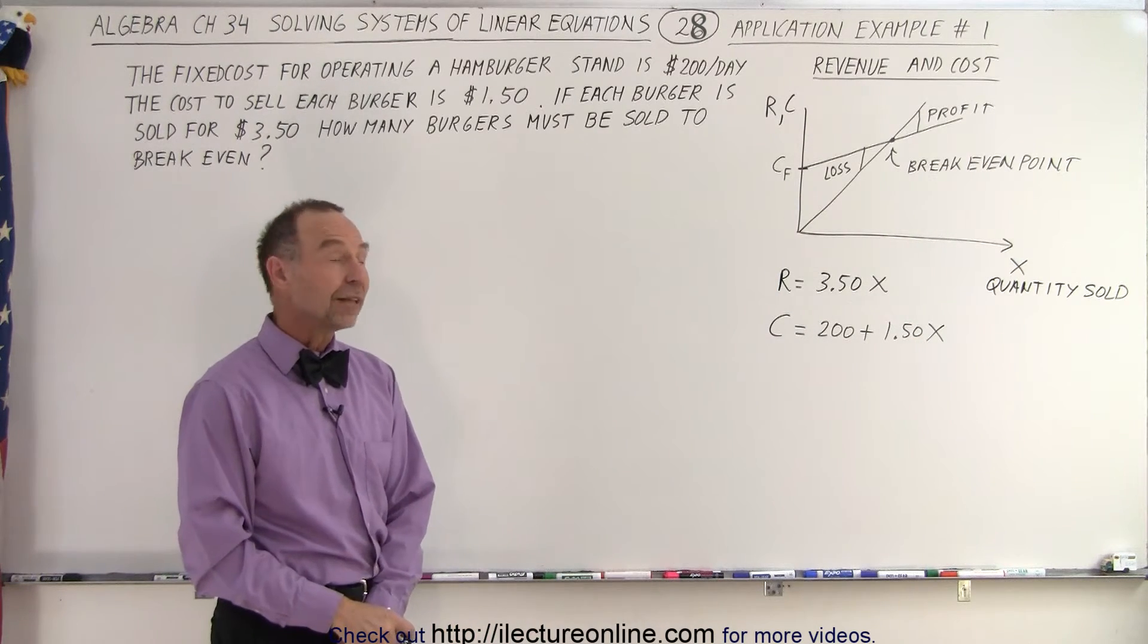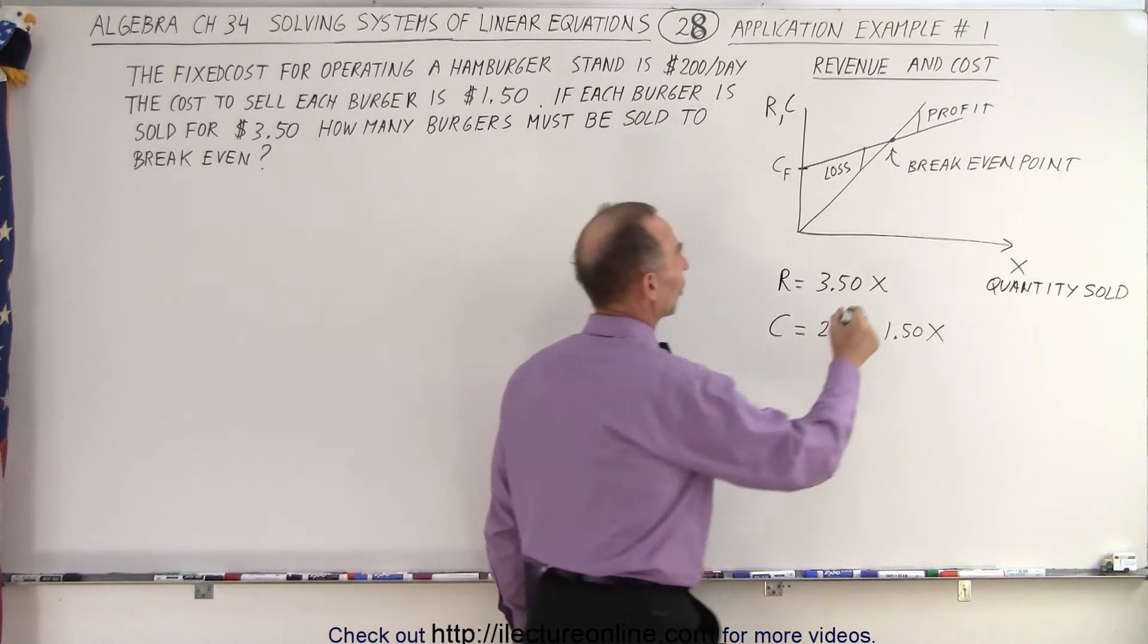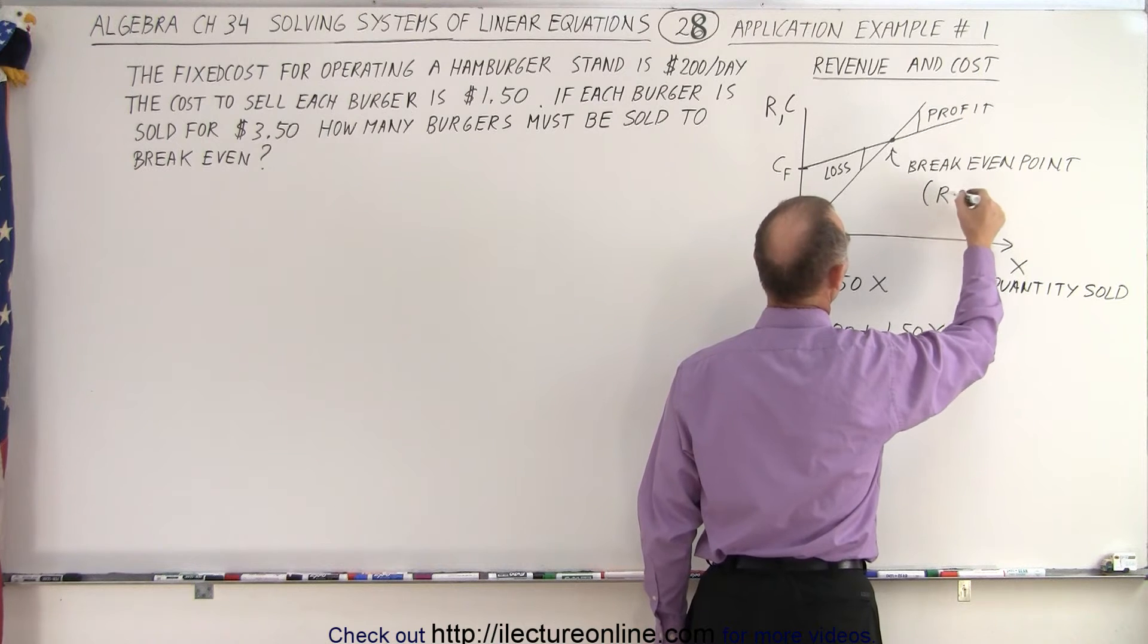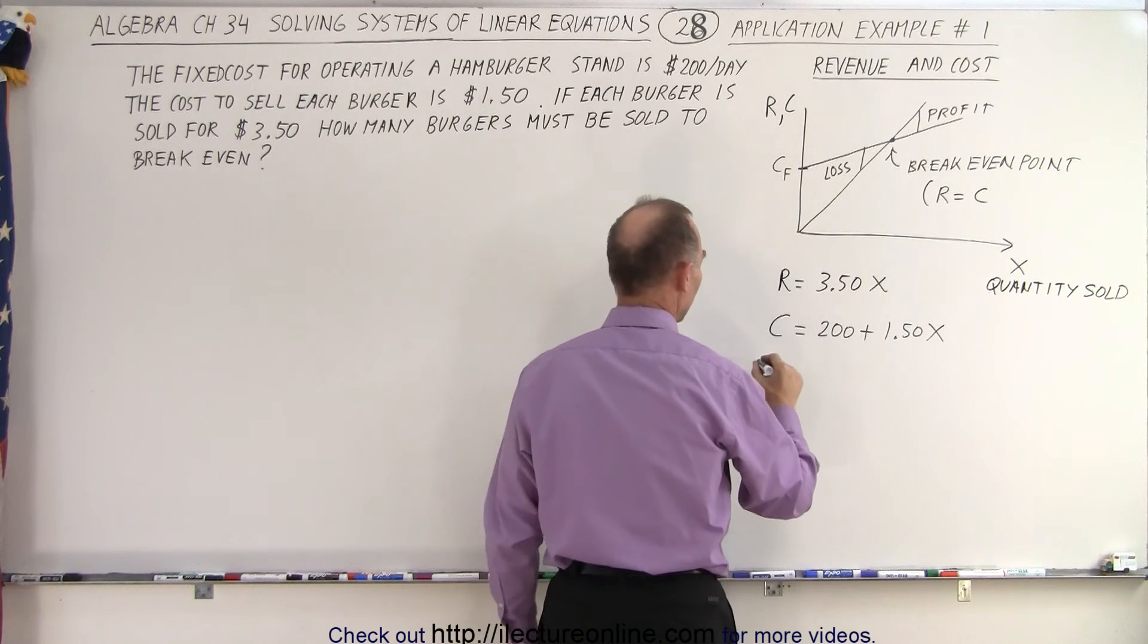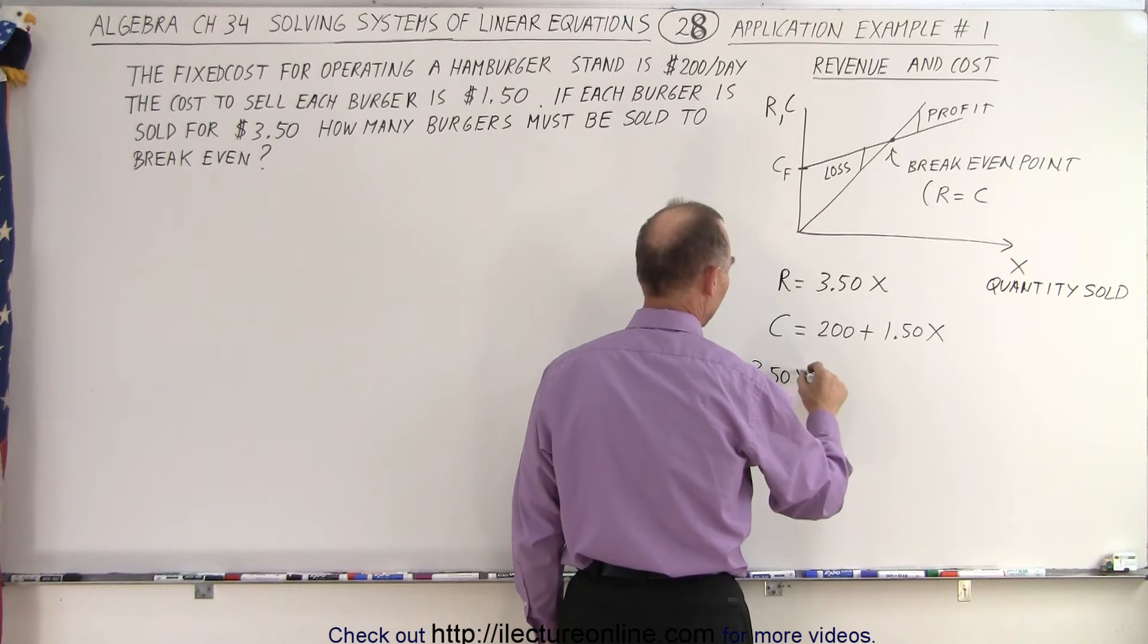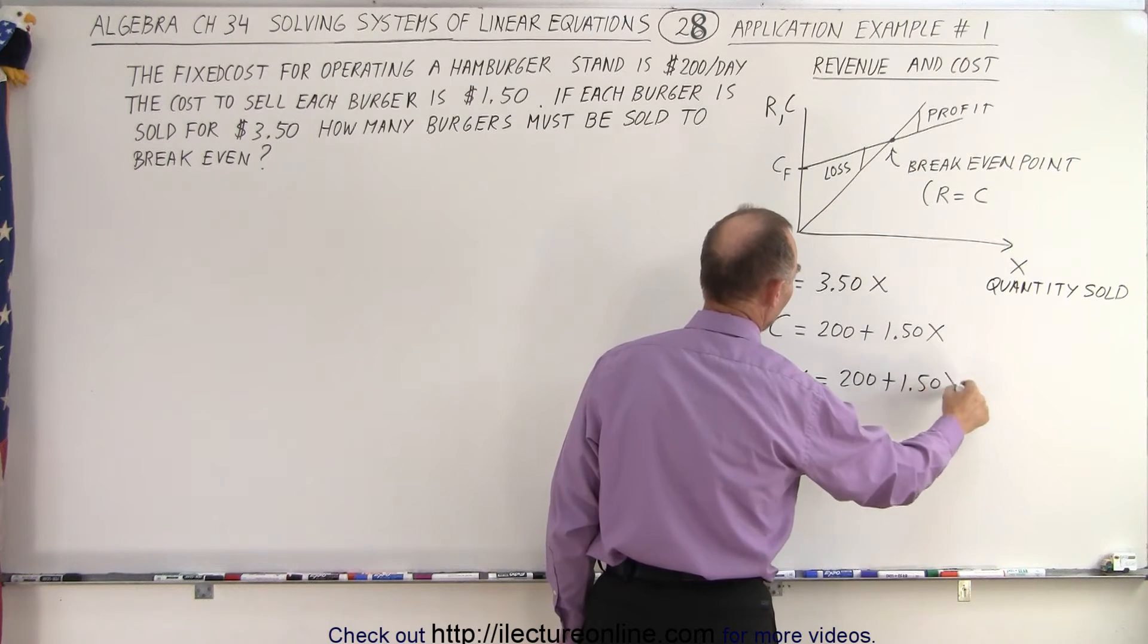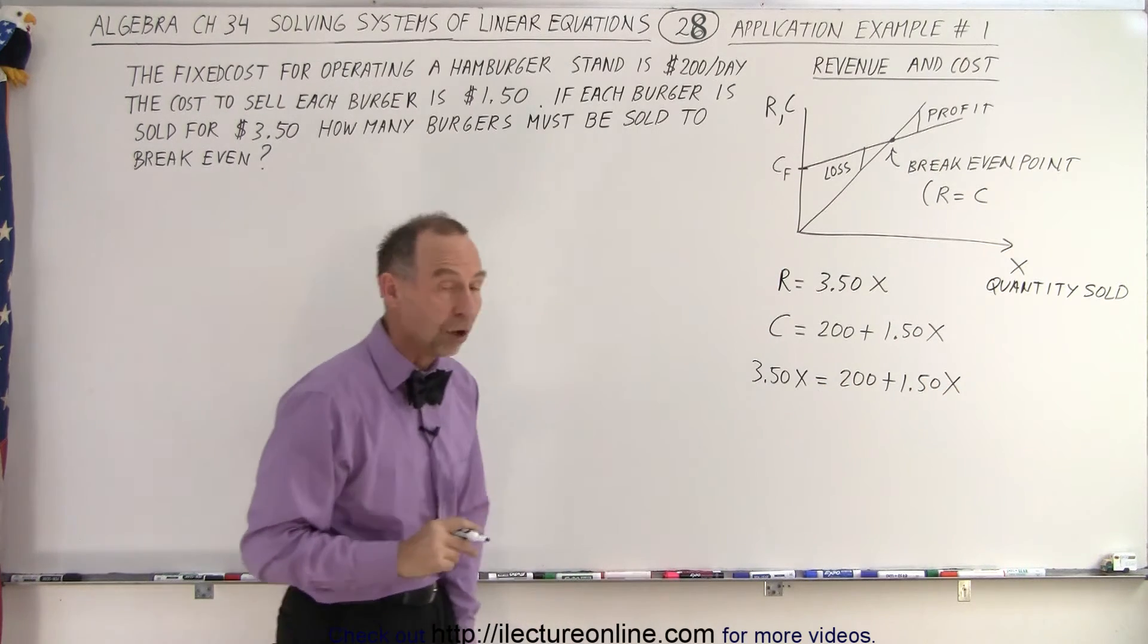How do we solve that? Well, we find the break-even point when the revenue is equal to the cost. So the break-even point means that the revenue is equal to the cost. So that means that 3.50x is equal to 200 plus 1.50x, and that we have to solve.